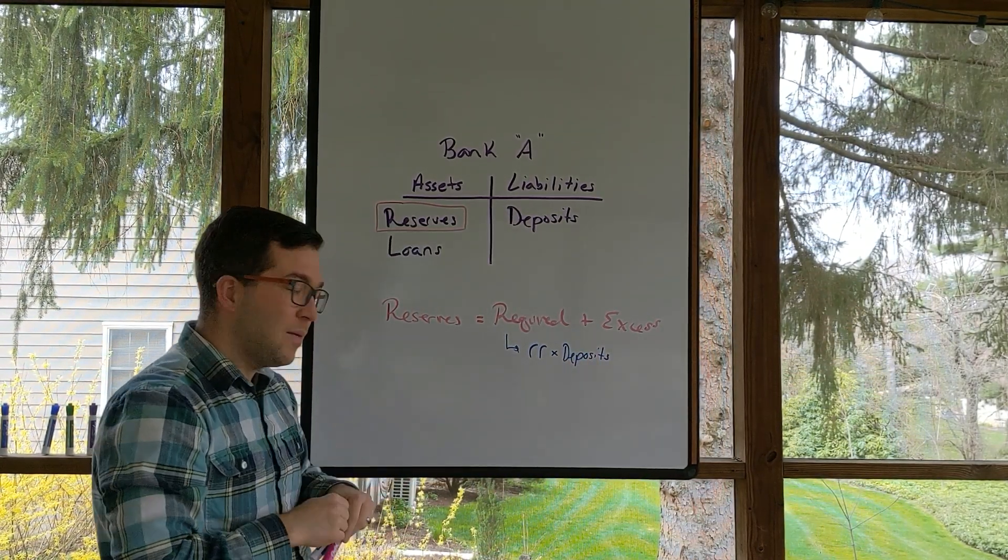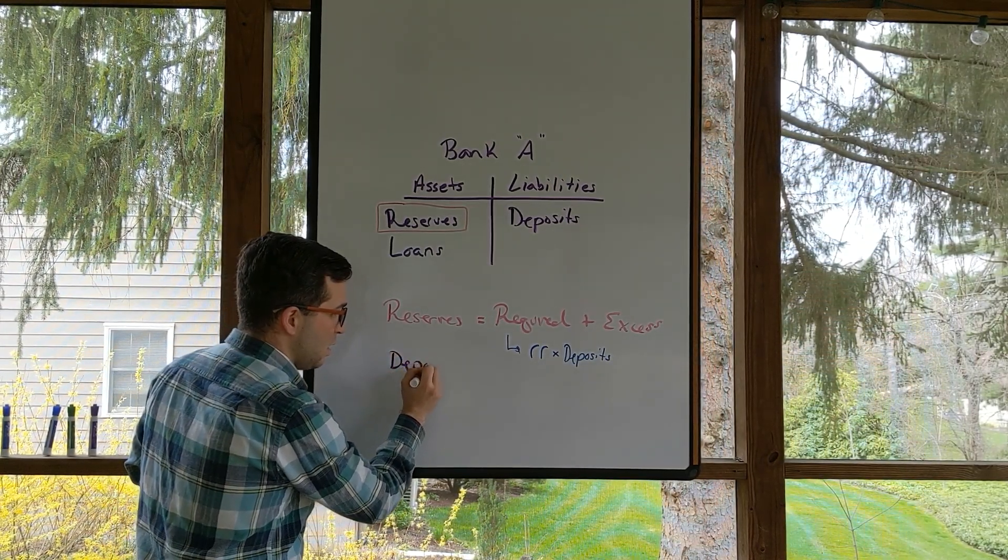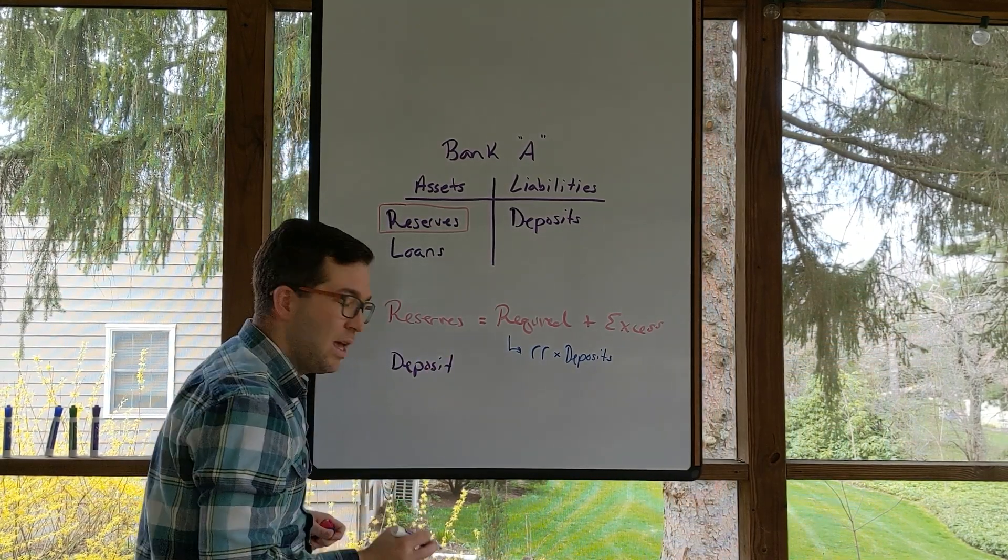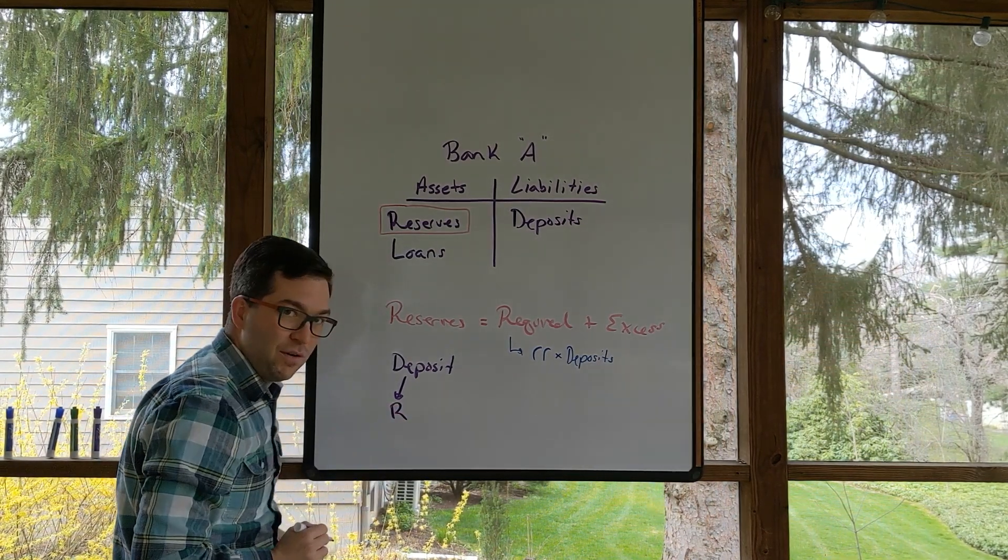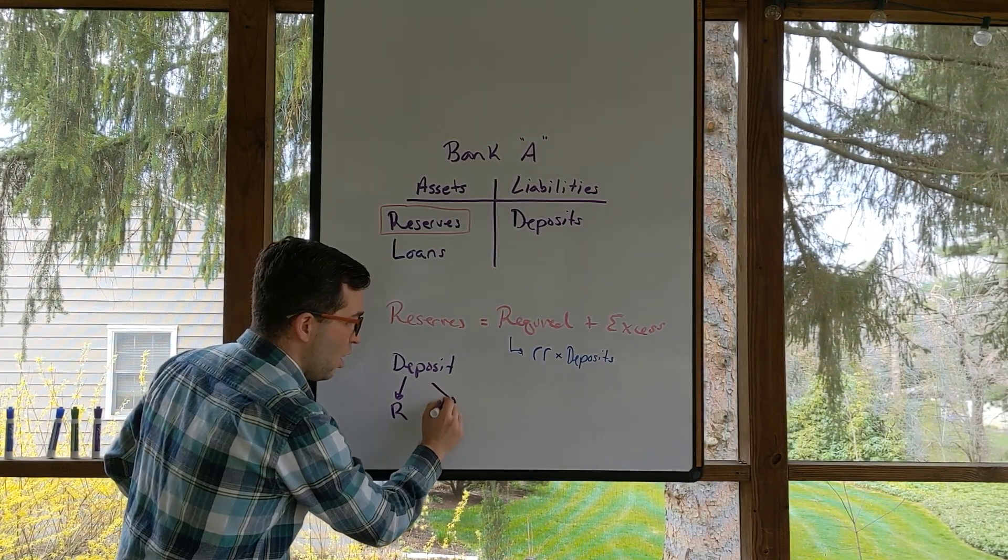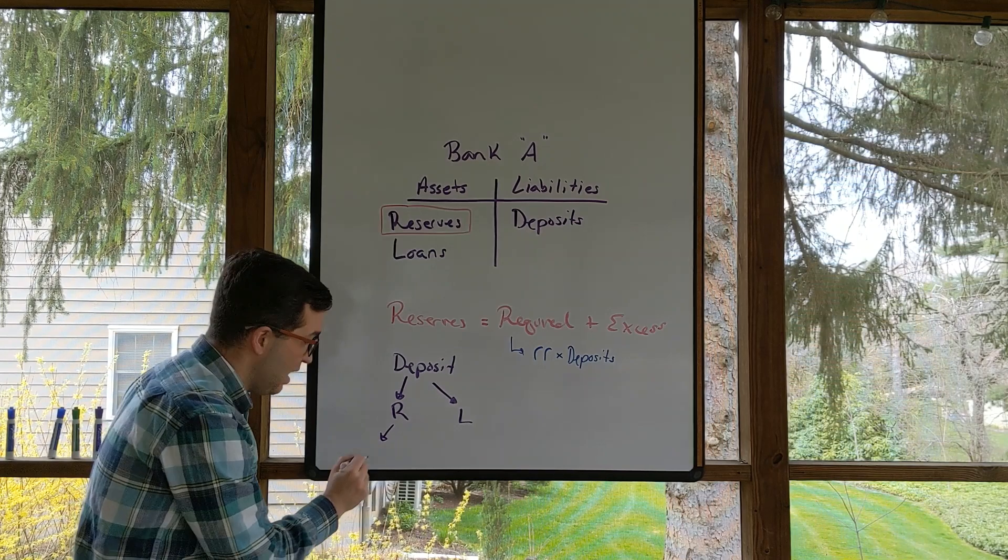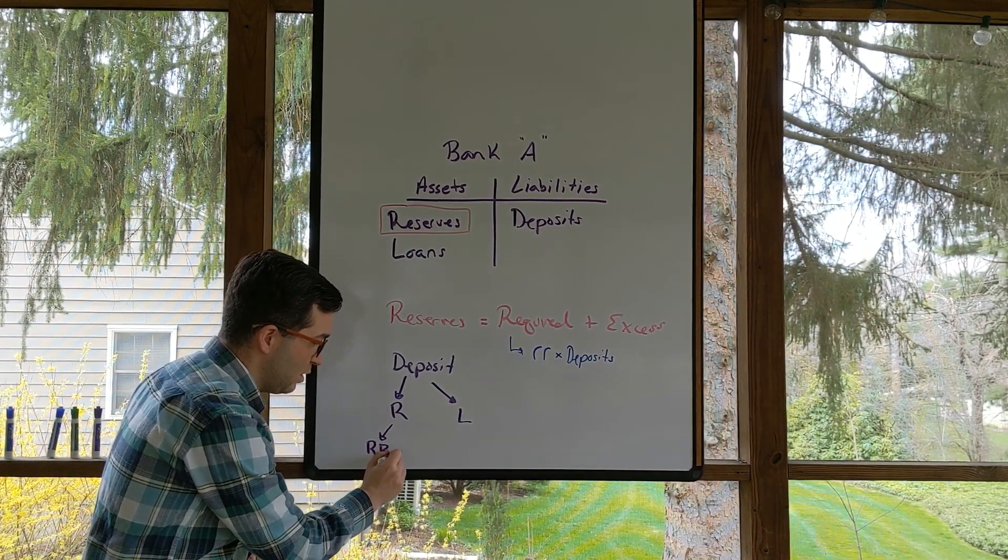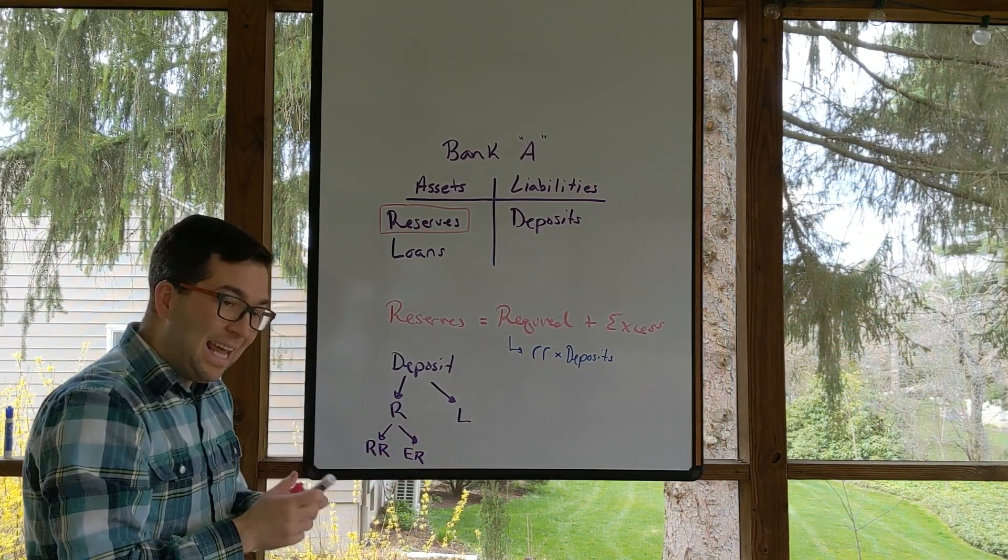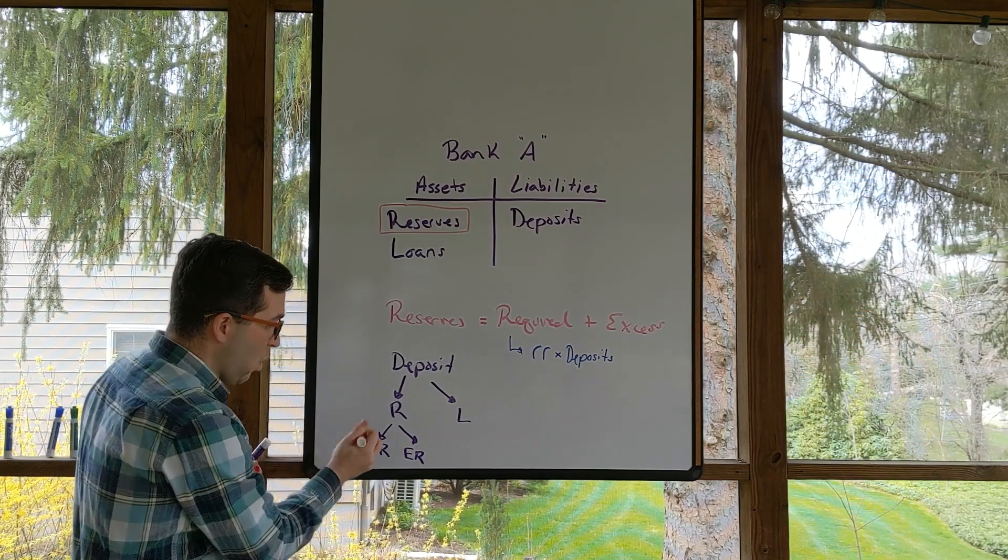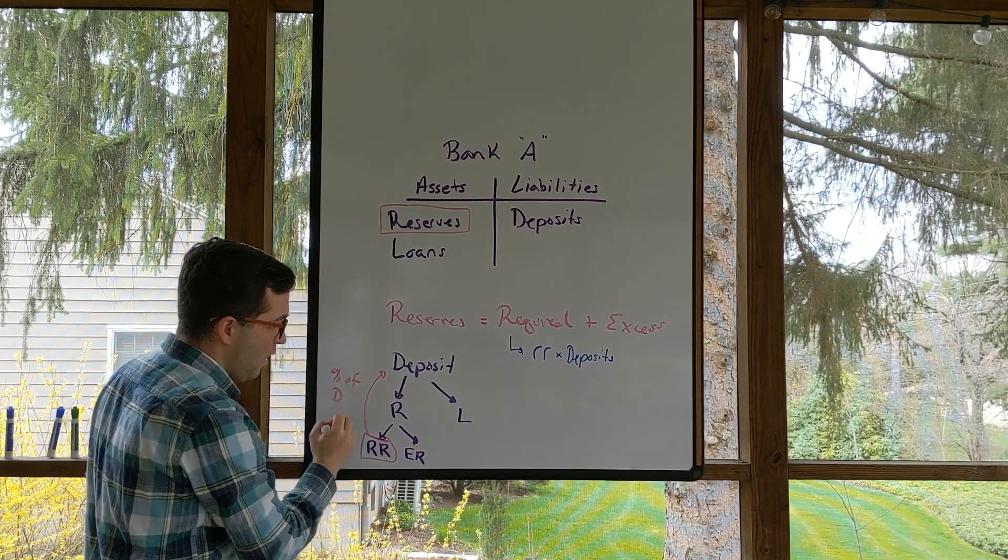One last way to think about this is when there's a deposit that goes into the bank, so let's say there's some deposit that goes into the bank, that's going to get split up by the bank. It's either going to become a reserve or it's going to become a loan. The reserves are either classified as required reserves or excess reserves. And again, this required reserve is going to be a percent of the deposits.